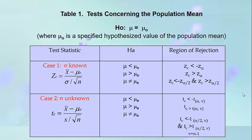For the alternative hypothesis mu greater than the hypothesized value, the rejection region is computed z greater than the critical value z-alpha. If the alternative hypothesis is mu not equal to the hypothesized value of mu, the rejection region falls in either the left or the right tail of the normal curve — either the negative or the positive critical values.